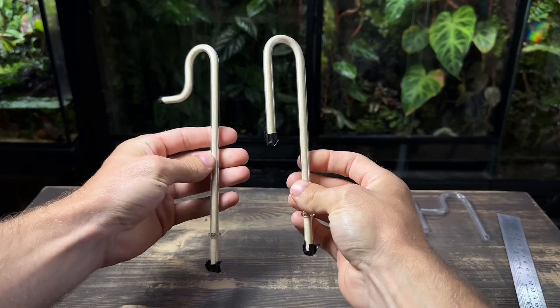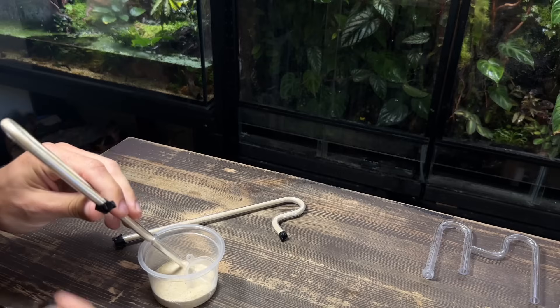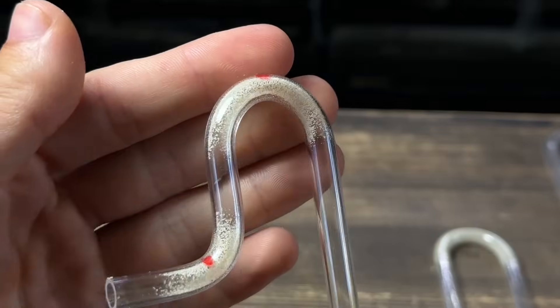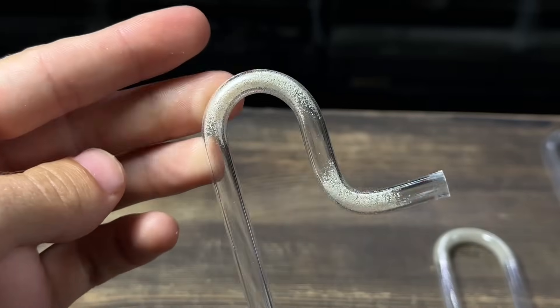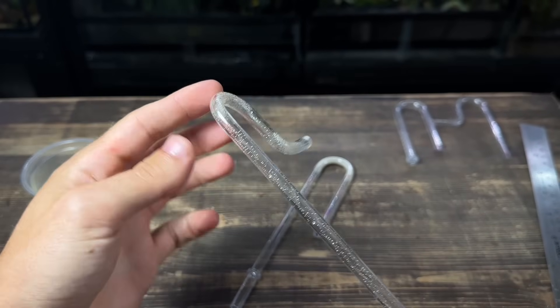With both the intake and output bent to shape I can now remove the tape and pour out the sand. One issue that you're going to face is that sand is going to get trapped in the places where the straw was bent. Water doesn't get rid of it but there is an easy way that I'll show you shortly.